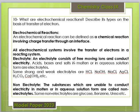An electrolyte consists of free-moving ions and conducts electricity. Electrolytes can be strong or weak — for example, NaCl is a strong electrolyte. Weak electrolytes include silver chloride, carbonic acid, and calcium hydroxide. Non-electrolytes are substances whose aqueous solution will not conduct electricity — non-polar covalent substances with no free electrons are considered non-electrolytes.